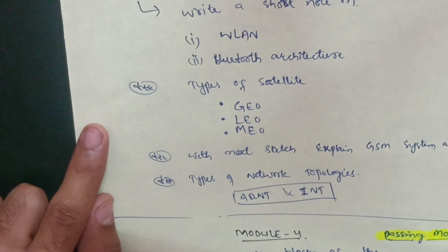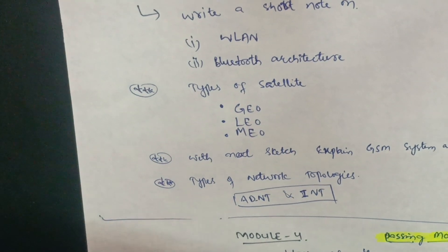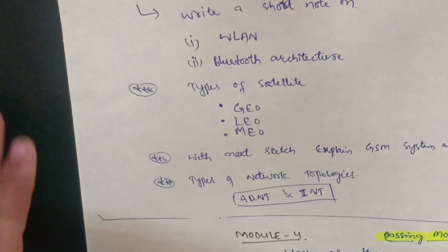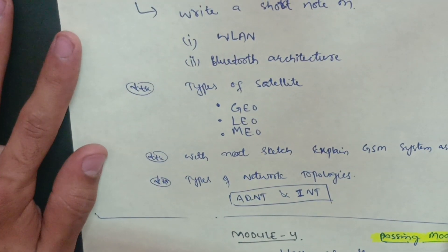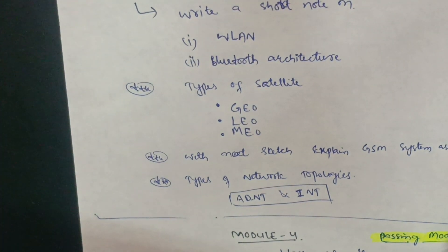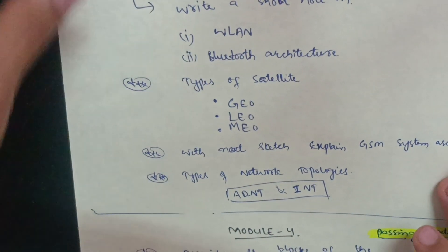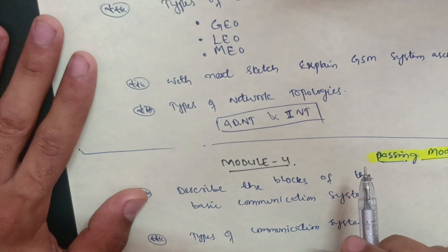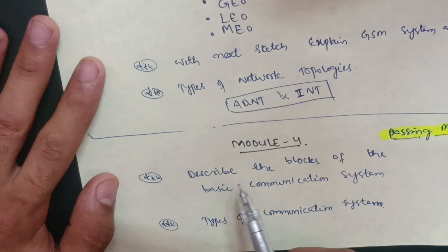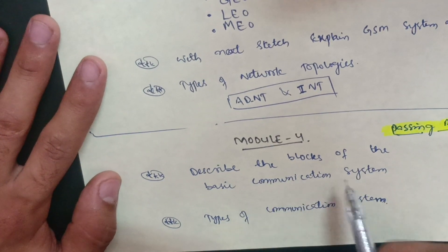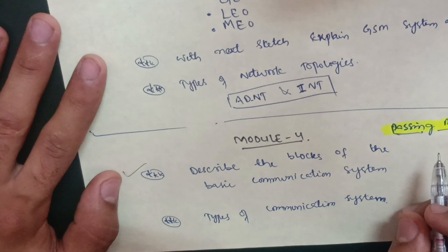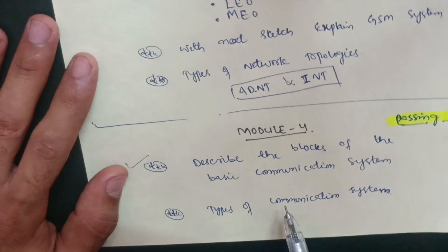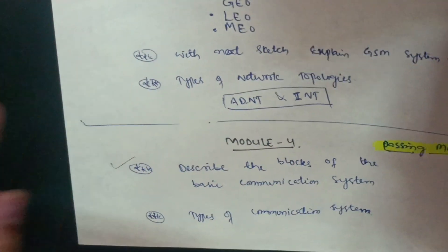This much content is enough for Module 5. As backlog students, it is definitely a burden to cover these subjects while regular examinations are ongoing, making it very difficult — especially for electronics, which is the toughest subject. Then comes Module 4, also a passing module. So you have to focus fully on Module 3, Module 5, and Module 4. In Module 4, you have to describe the blocks of the basic communication system with a neat diagram.